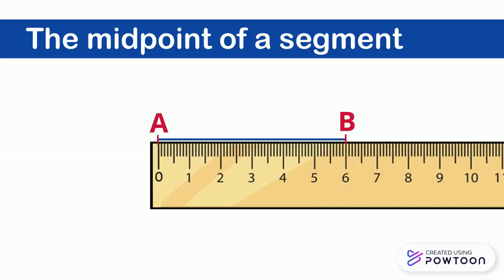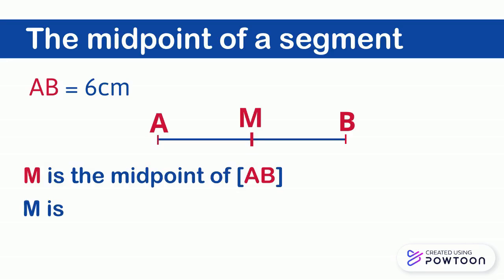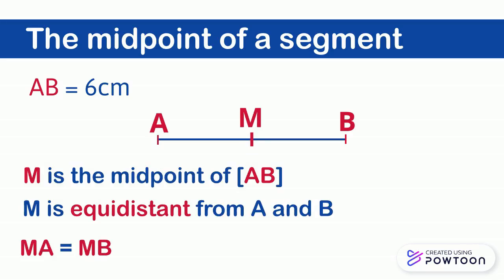For example, segment AB measures six centimeters. To find its midpoint M, first we should find the half of six. The half of six is three. We make a small dash on the three and then we place the midpoint M of segment AB. M is equidistant from A and B, so we say that MA equals MB equals three centimeters. In geometry, we can identify that MA equals MB by placing a code—a small sign or a line—on MA and the same code on MB.